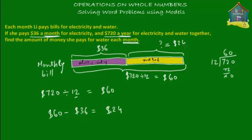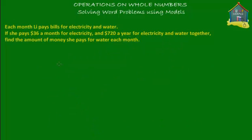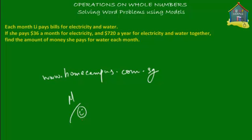So that's $24, which is what was asked: how much does she pay for water each month? Lee pays $24 for water each month. That's it for this word problem. For more word problems and practice exercises, visit www.homecampus.com.sg. Don't forget to practice because practice makes perfect. This is M signing off for now. Bye-bye.